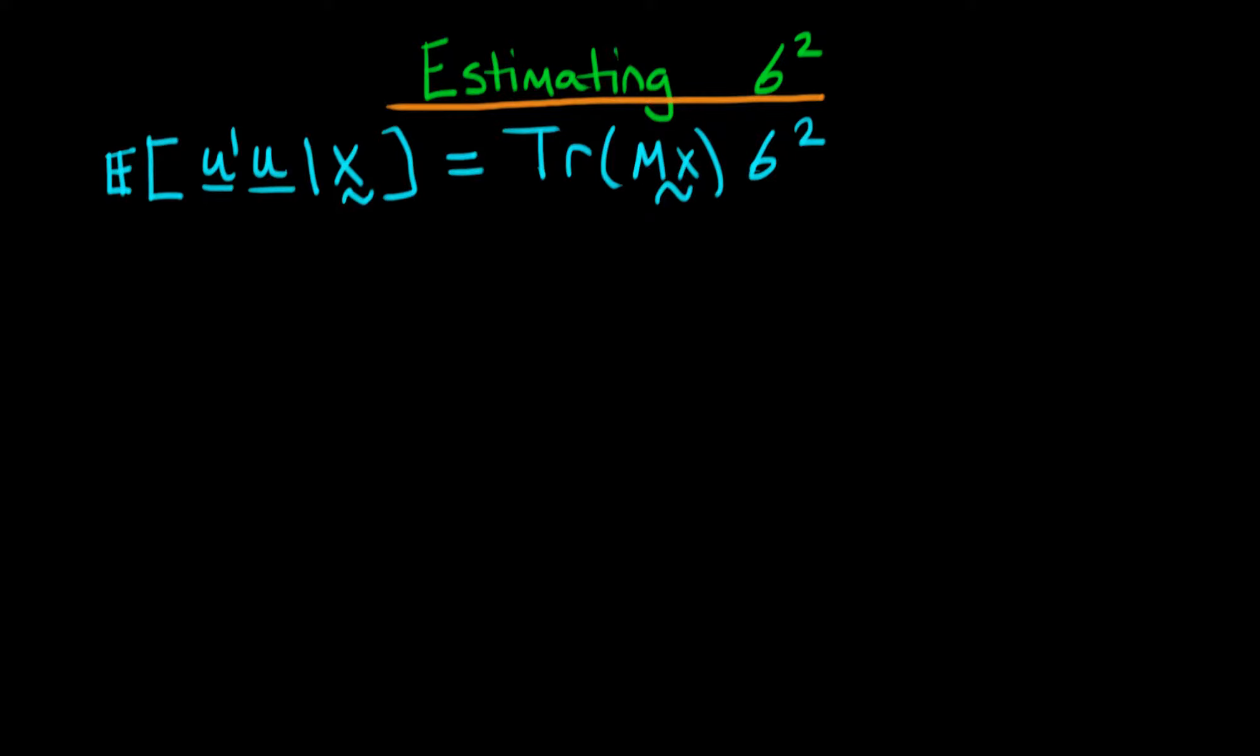In this video we're going to finish off our derivation of an unbiased estimator for sigma squared. At the end of the last video, we showed that the expectation of u prime times u given x is equal to the trace of mx times sigma squared.